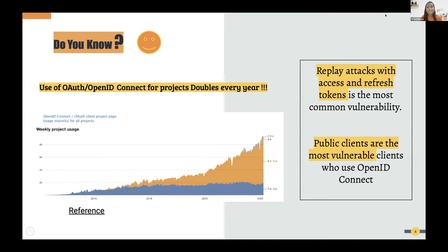This growth gives attackers opportunities to exploit vulnerabilities to attack your applications and get your data. Replay attacks on access tokens and refresh tokens are among the most common vulnerabilities in the IAM domain. Public clients are the most vulnerable — they don't have secure storage for access tokens or refresh tokens, making those tokens more likely to be stolen or compromised.